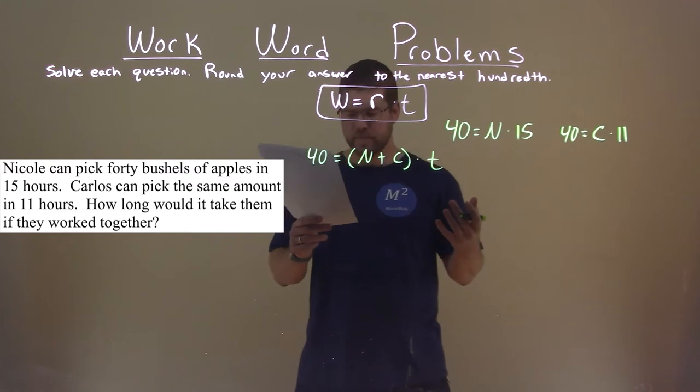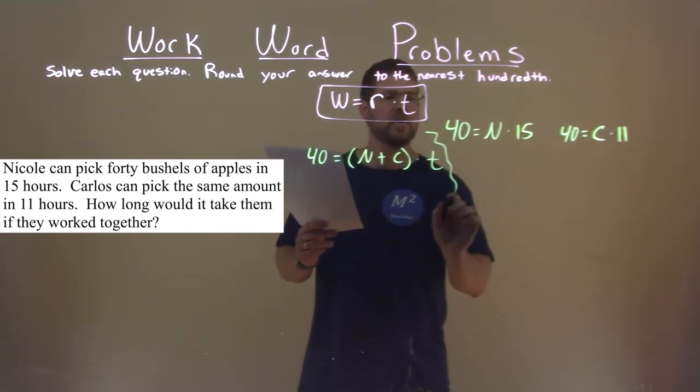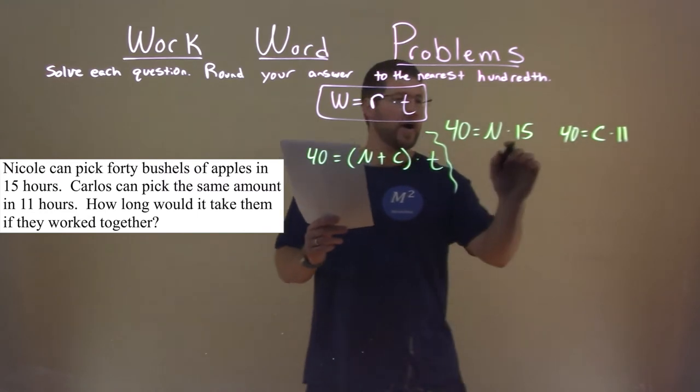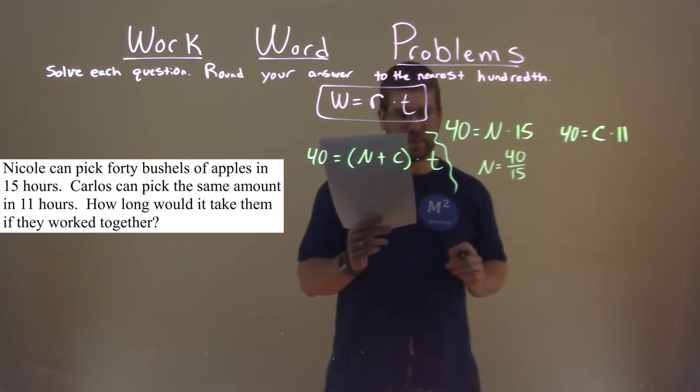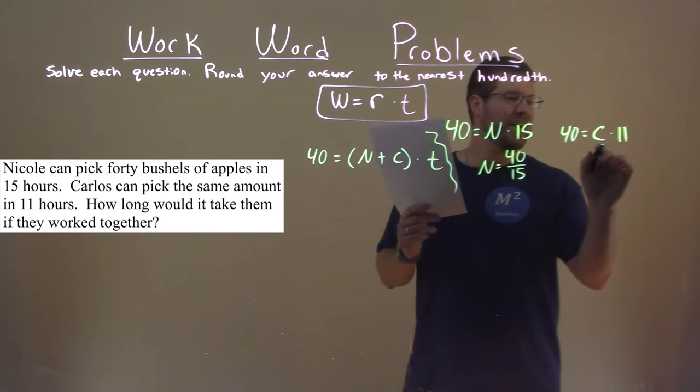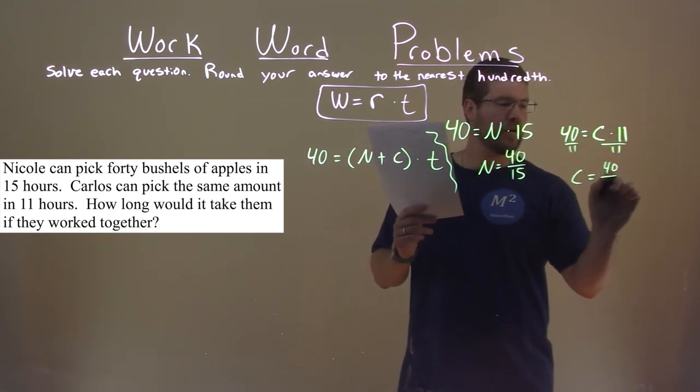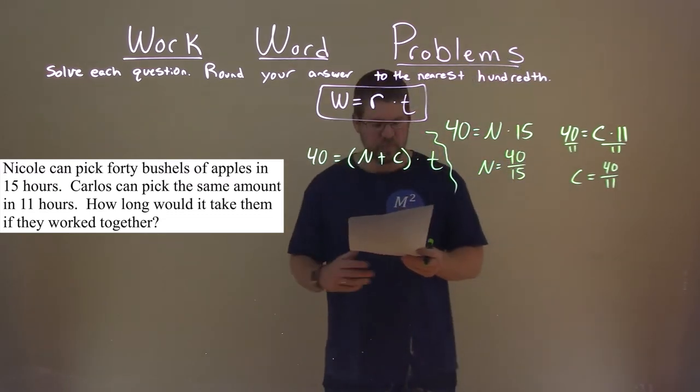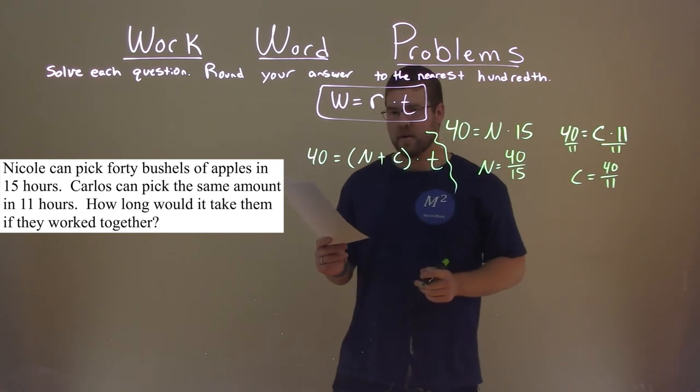How do we solve this? Well, we can find each one's individual work rate. We divide 15 on both sides, and n equals 40 over 15, and that's Carlos's work rate. I'm sorry, so we can plug those two values in right here for n and c.